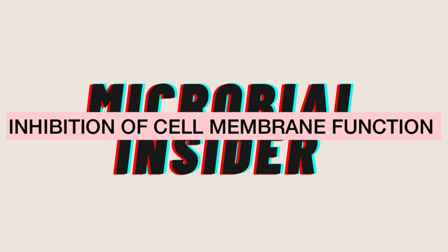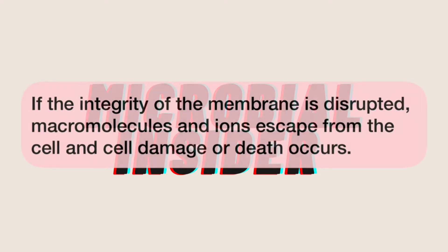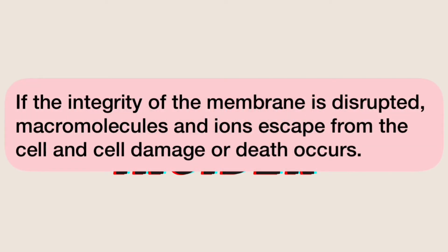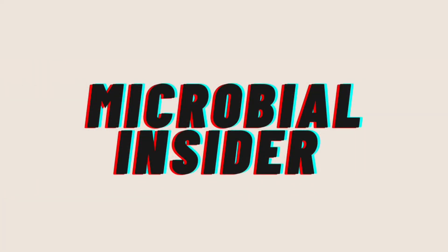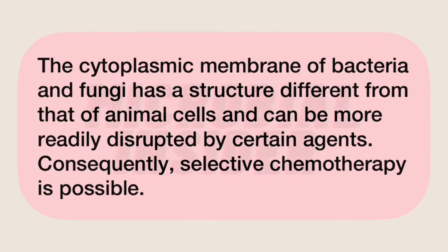Inhibition of cell membrane function. The cell membrane of all living cells serves as a selectively permeable barrier, carries out active transport functions, and thus controls the internal composition of the cell. If the integrity of the membrane is disrupted, macromolecules and ions escape from the cell, and cell damage or death occurs. The cytoplasmic membrane of bacteria and fungi has a structure different from that of animal cells, and can be more readily disrupted by certain agents. Consequently, selective chemotherapy is possible.